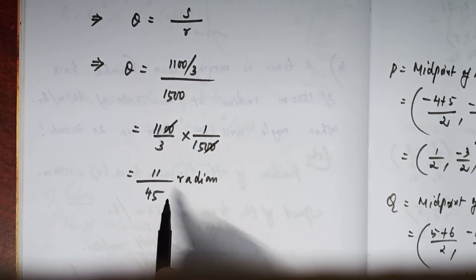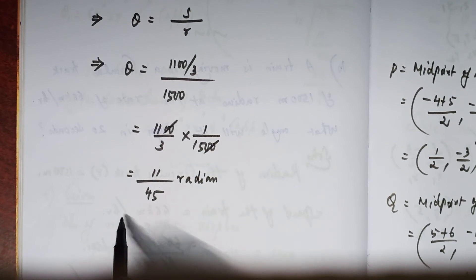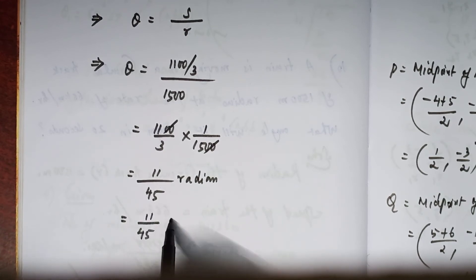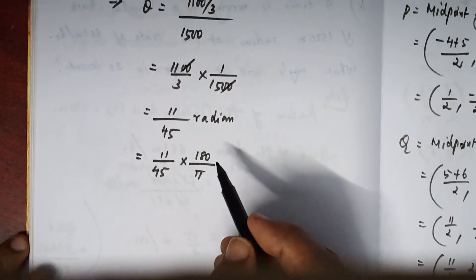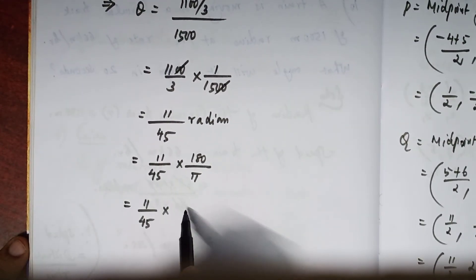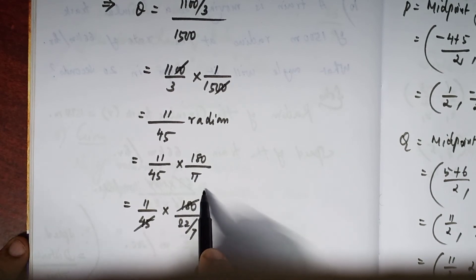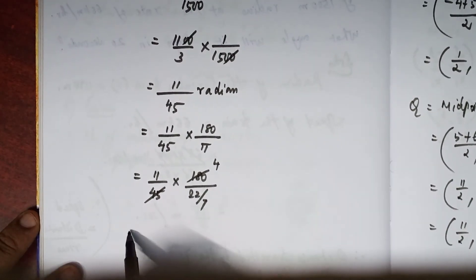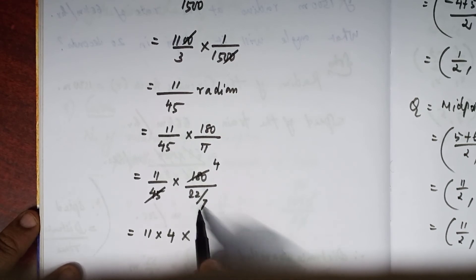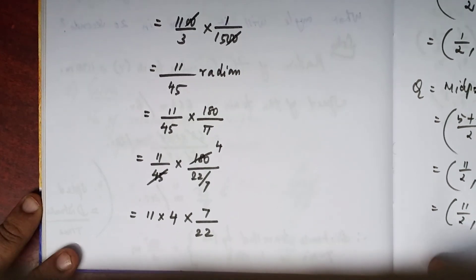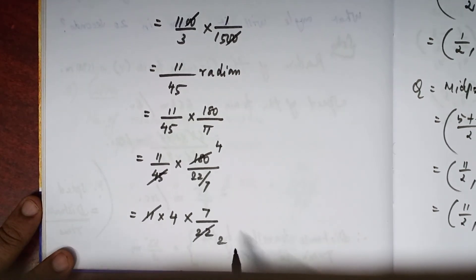We can convert this angle from radians into degrees. For converting radians into degrees, multiply by 180 divided by pi. That is 11 by 45 into 180 divided by pi, where pi equals 22 divided by 7. Simplifying: 45 goes into 180 four times, and 11 and 22 cancel, giving 14 degrees.